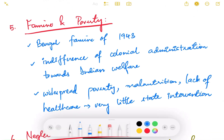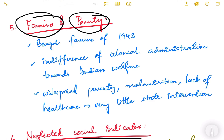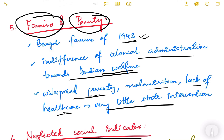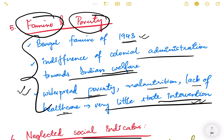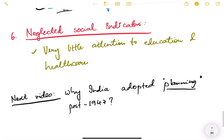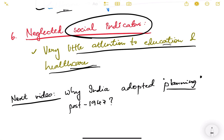There were also widespread famines and poverty during British rule — starvation deaths, and the Bengal Famine of 1943 was the worst. The colonial administration was indifferent to Indian welfare — they did not care about social welfare, health, education, or literacy. There was widespread poverty, malnutrition, lack of healthcare, and very little state intervention. Social sectors — education, healthcare, sanitation — were entirely neglected during British rule.